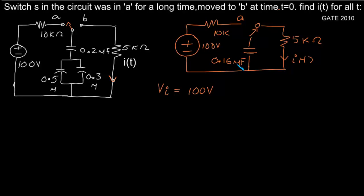Across this 0.16 microfarad capacitor, it now discharges through the resistor and attains a final steady state voltage of 0V. The capacitor exponentially discharges through the resistor, giving rise to a current i(t). The final value of the current will be 0, and the initial current will be 100 divided by 5K. To find i(t), we first find the voltage across the capacitance or the decay equation of the capacitance, then divide by the resistance.